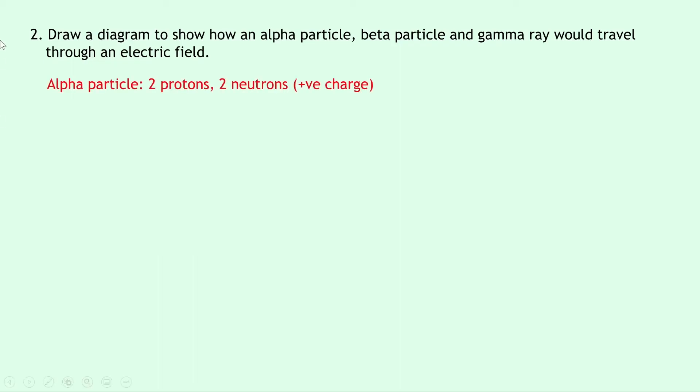So an alpha particle first of all is two protons and two neutrons so it's positively charged because neutrons are neutral and protons are positively charged so overall this thing must be positively charged.